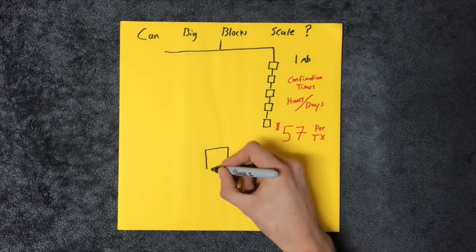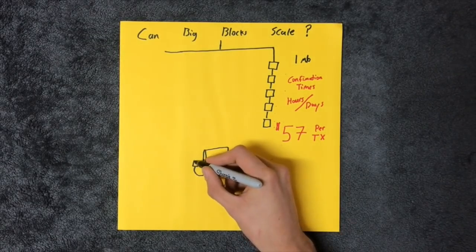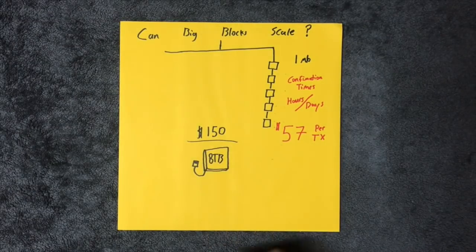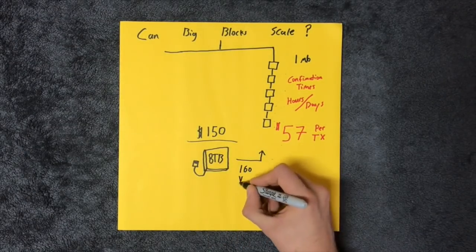An 8 terabyte hard drive currently costs only about $150, which could contain the next 160 years worth of the current blockchain.